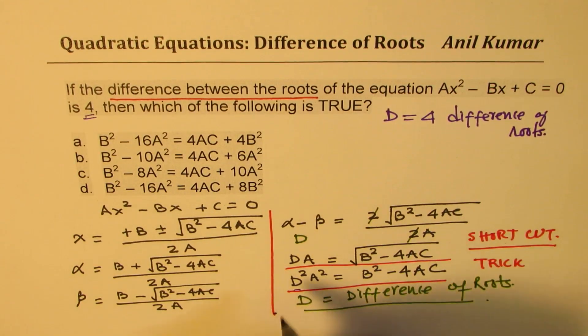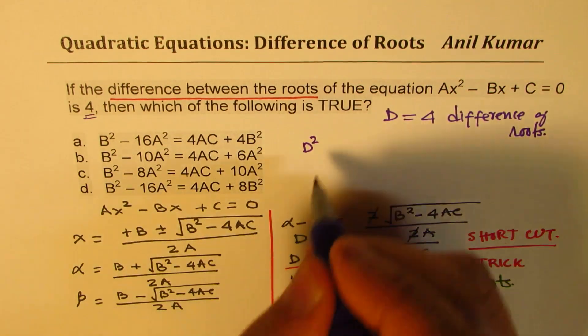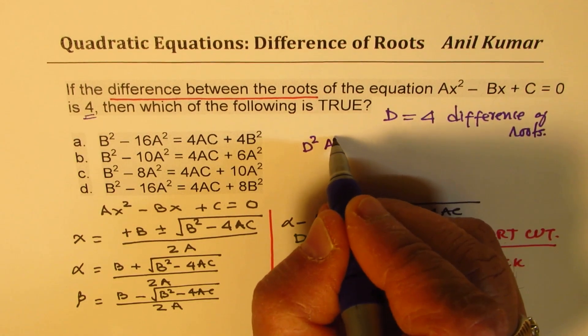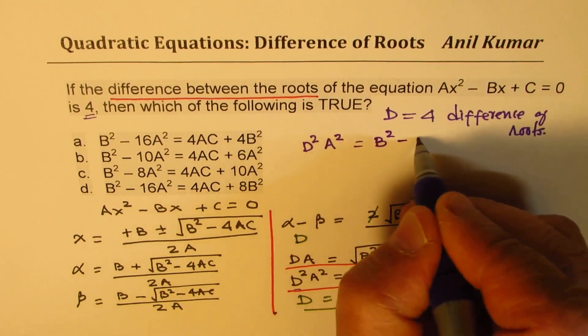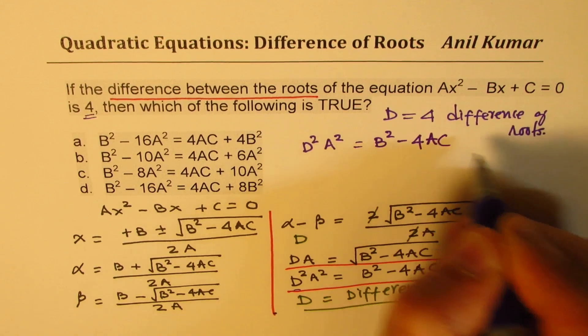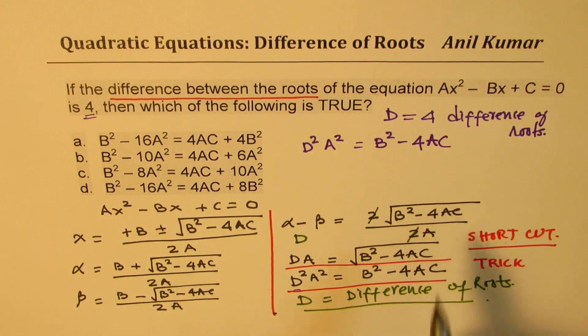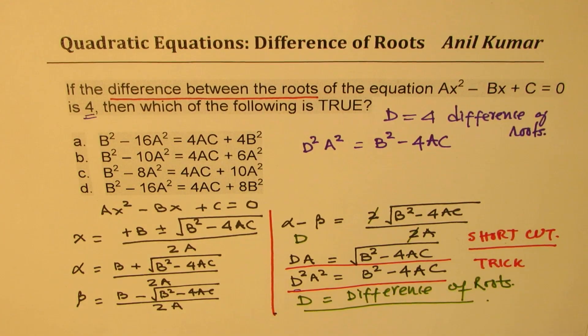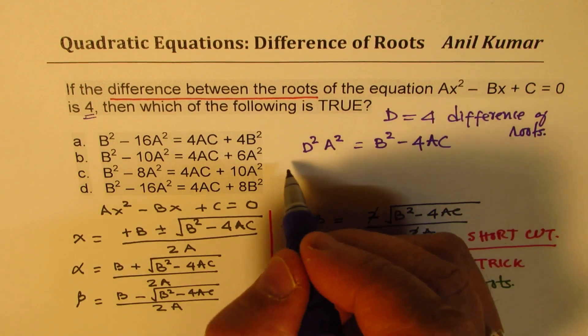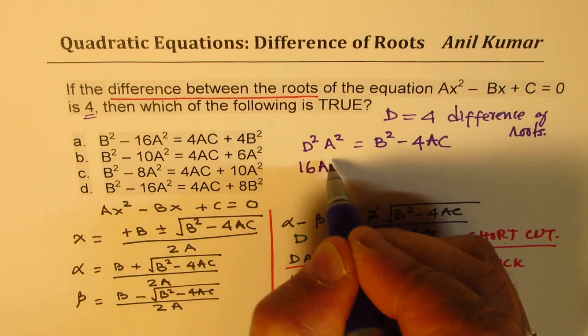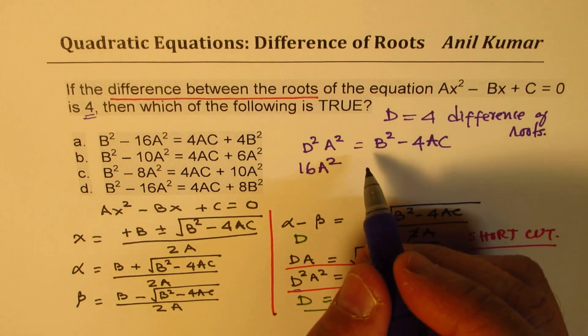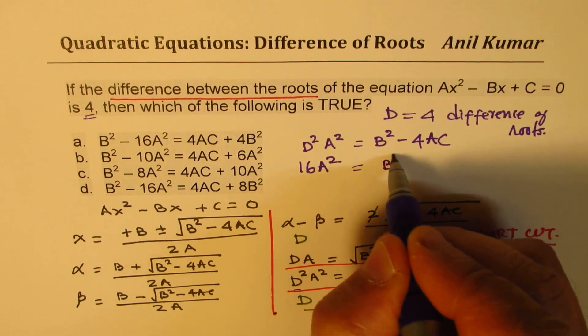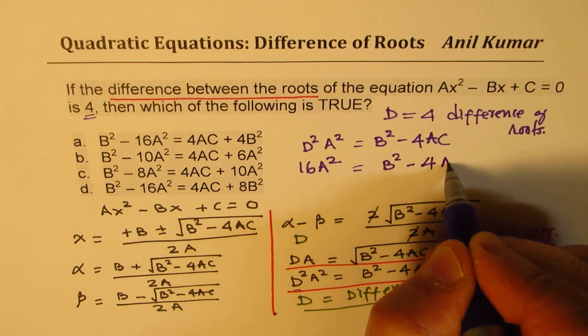We know the value of d. That means we need d²a² on one side, and b² - 4ac on the other side. Easy to remember - b² - 4ac, you always use. So d is 4, which means we're looking for 16a².